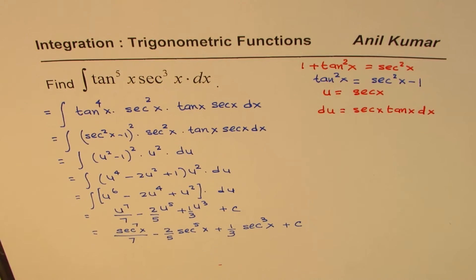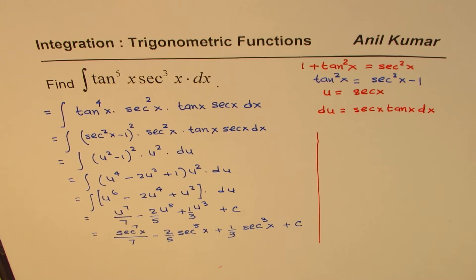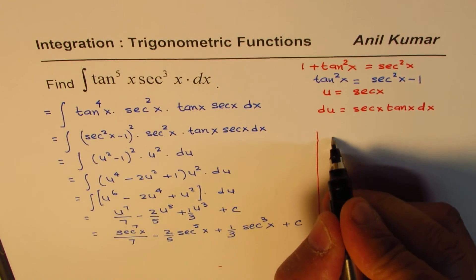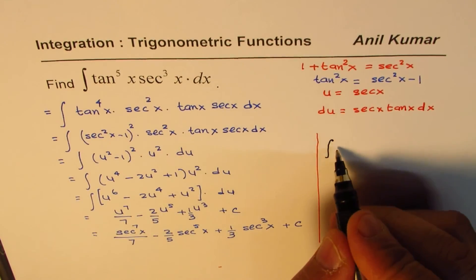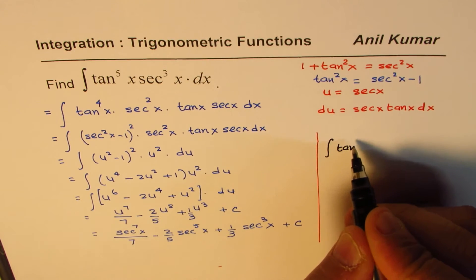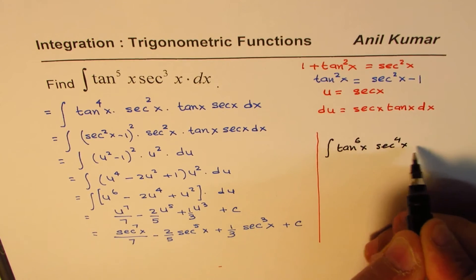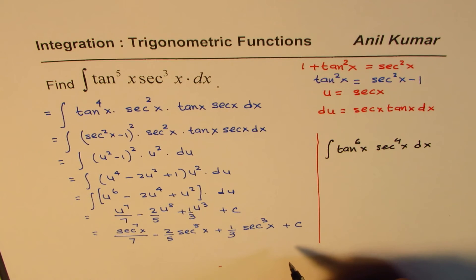And now we will also discuss a strategy if I kind of change the equation. If I have integral of, let me change the equation and we will discuss this. We will find solution in another video. However here is a strategy. If I change the equation, make them even. For example if I make them tan to the power of 6 x and secant to the power of 4 x dx. Now in that case what should be the strategy.